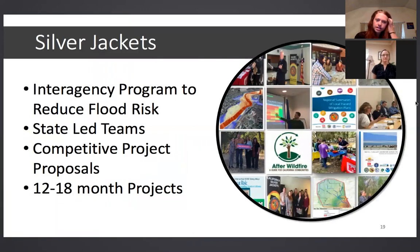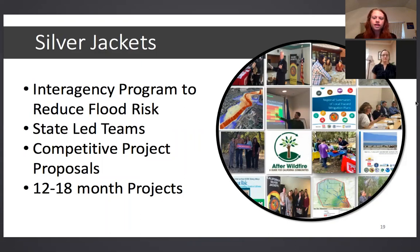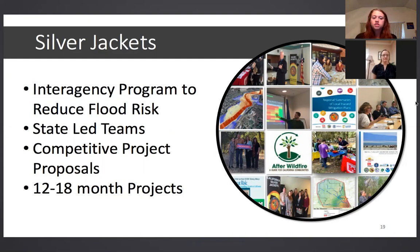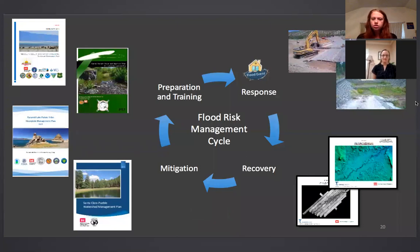Our main focus is the Silver Jackets interagency program. We really want to keep an interagency eye on all projects that we do. The Silver Jackets program is the network we use to work together to reduce flood risk — building a team before we need a team, before a disaster happens. We do short-term projects of 12 to 18 months, doing smaller projects to build those relationships. All of our teams are state-led. We do competitive project proposals working with our headquarters to get funding for our staff to participate, and we work with other agencies to commit in-kind services toward the project.